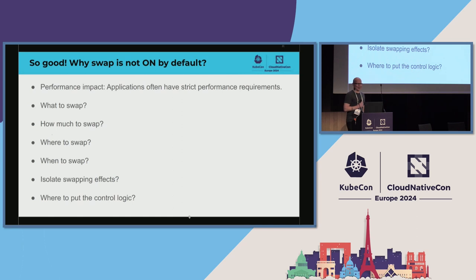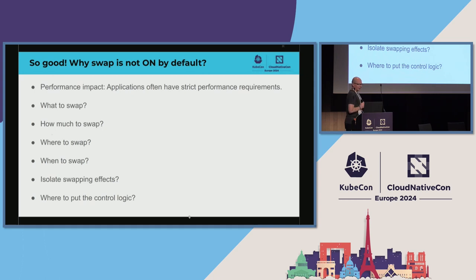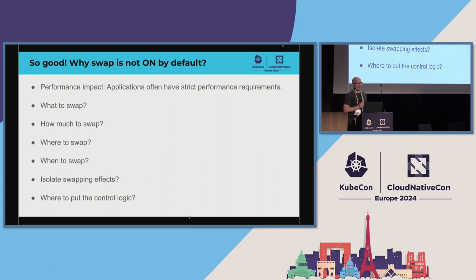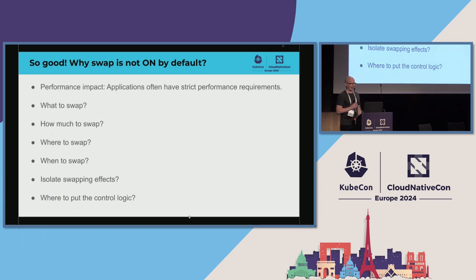The point of this talk is not to think of swap as a single switch that is either on or off, but instead to consider different points of view on swapping so that you can get the benefits without suffering too much from the costs. The questions are: what to swap, how much to swap, where to swap, when to swap, how to isolate swapping effects, and finally where to put the control logic.